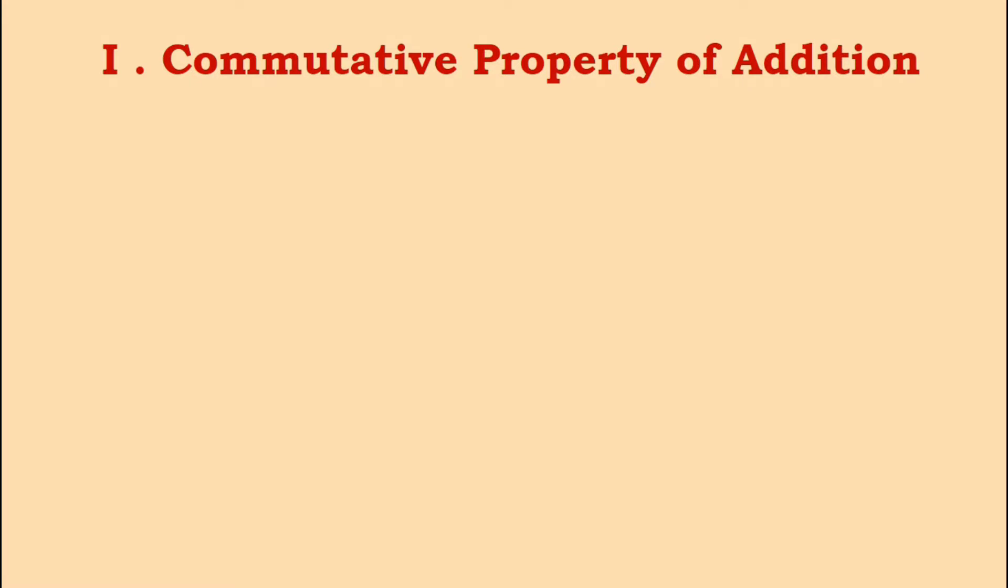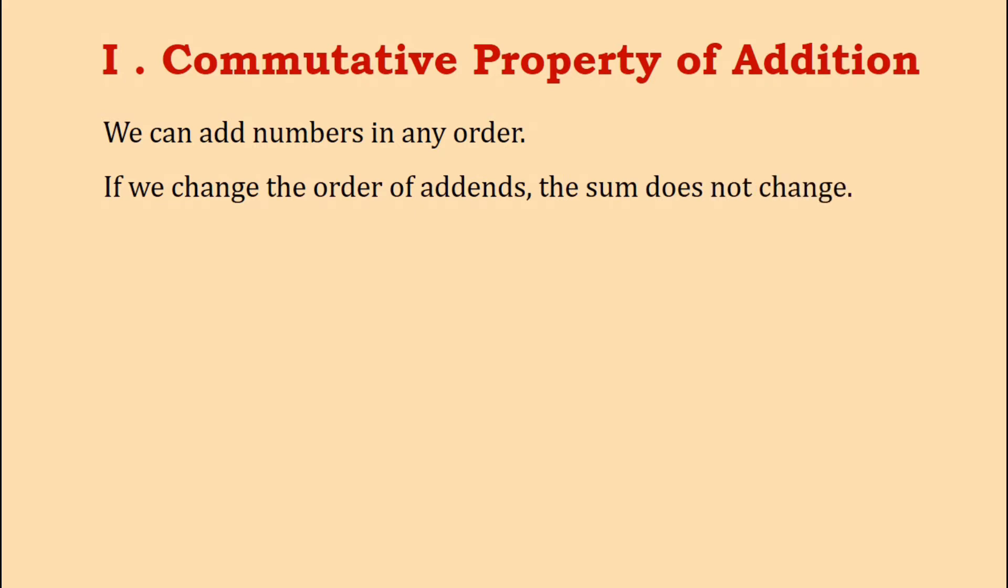Let us understand the first property of addition which is known as the commutative property of addition. According to this property, we can add numbers in any order, which means if we change the order of addends, the sum or the answer does not change.